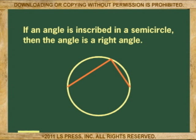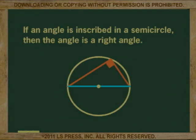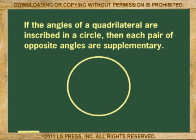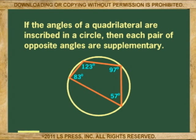If an angle is inscribed in a semicircle, then the angle is a right angle. If the angles of a quadrilateral are inscribed in a circle, then each pair of opposite angles are supplementary.